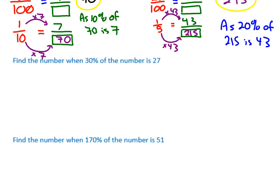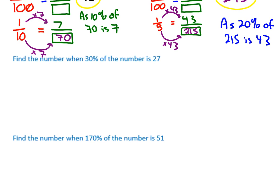Find the number when 30% of the number is 27. So it's just written in a different way. So 30% is 30 over 100, not 30 over 11. 30 over 100. And that's the same as 27 over the mystery number. So you can simplify the fraction again. It always just makes life easier.